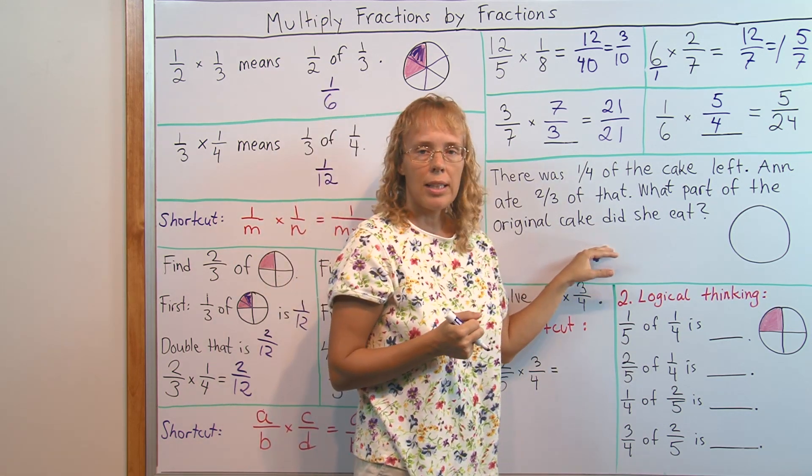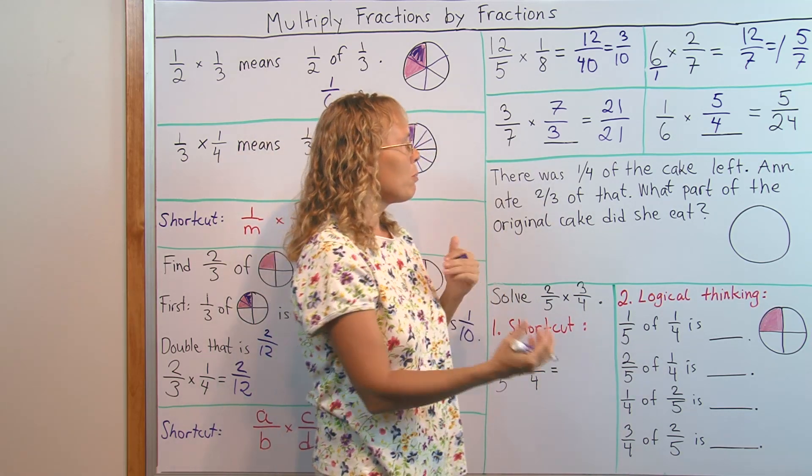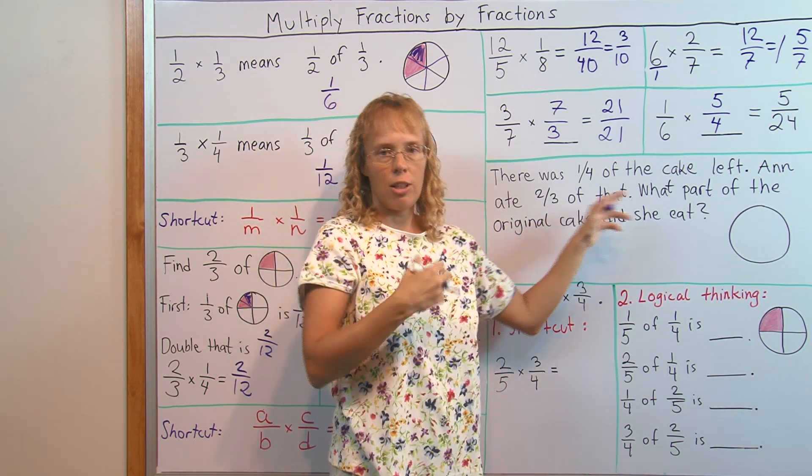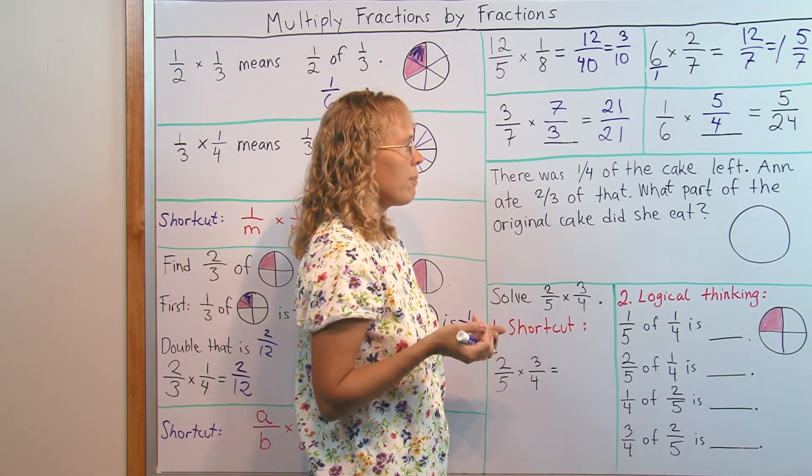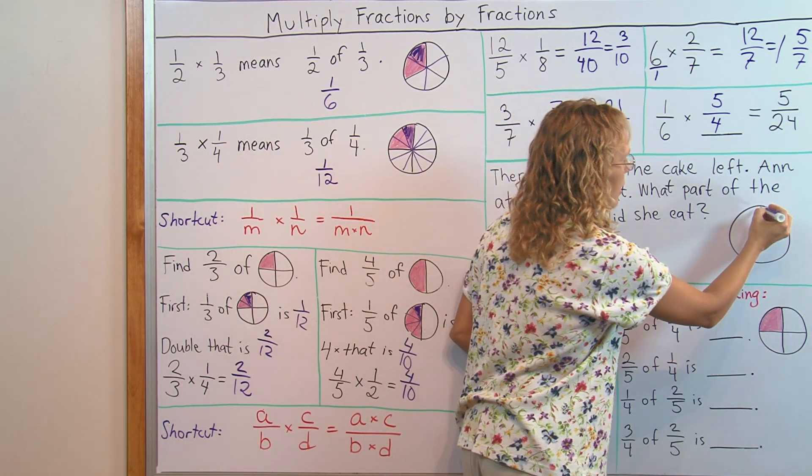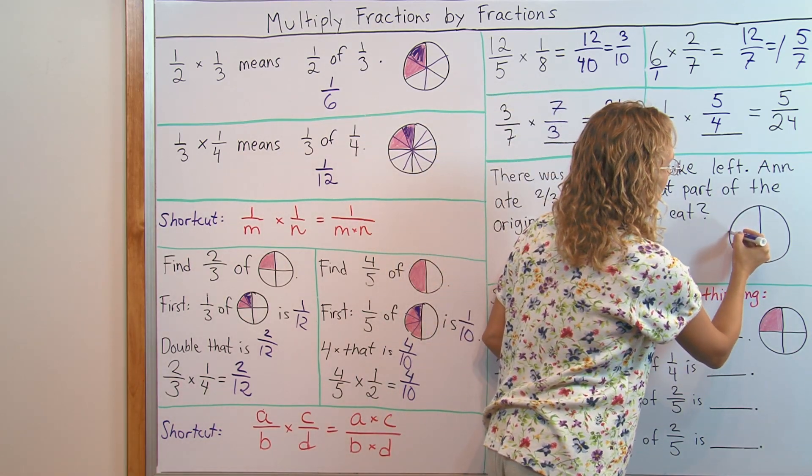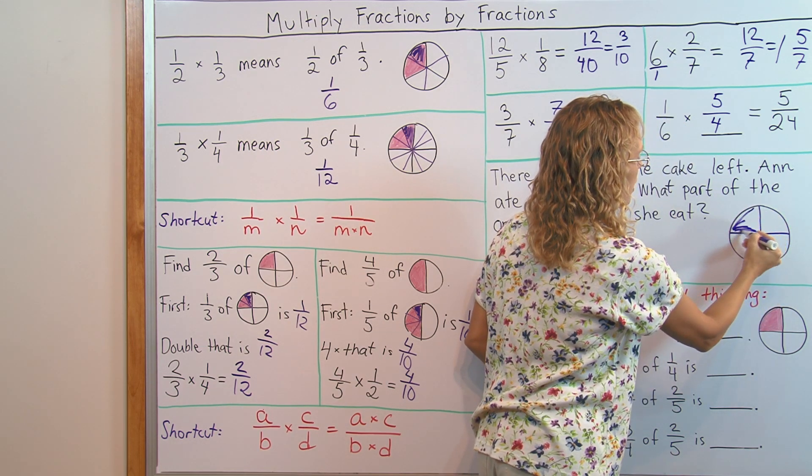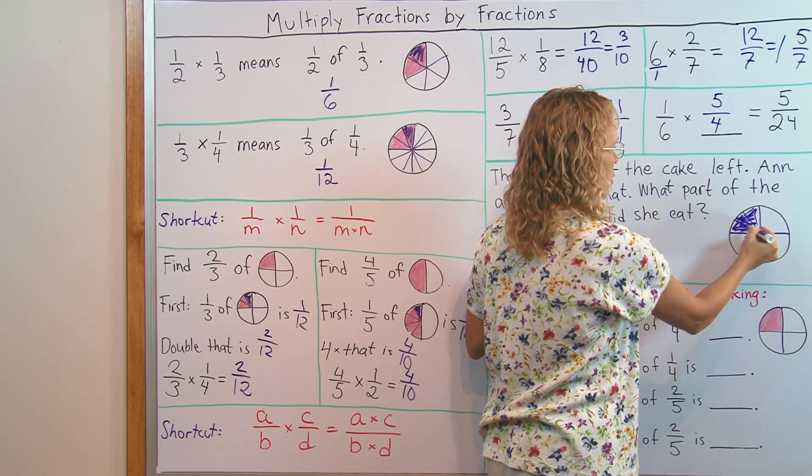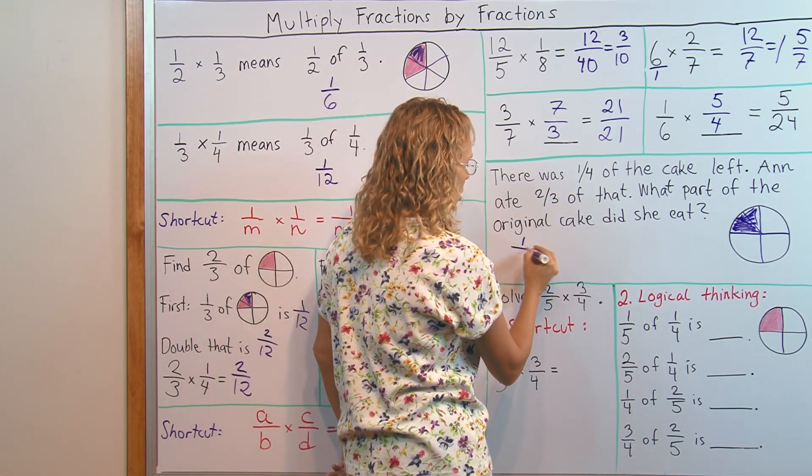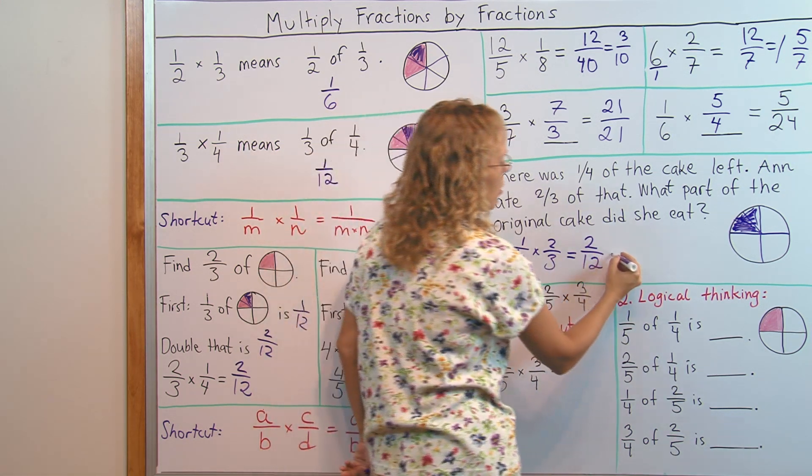Now here's one word problem that uses this concept. When we have the concept of fractions multiplied by fractions, then the word problems would be having this 'of' here, fractional part of a fraction. There was one fourth of the cake left, and Anne ate two thirds of that. What part of the original cake did she eat? This is a very easy problem, but students need to connect it with the fraction multiplication. One fourth here is how much is left, and then Anne ate two thirds of it. So we divide this remaining piece into three parts and then Anne ate two thirds of it. This is solved simply by multiplying these two fractions and we get 2 over 12. So the answer is 2 twelfths or it simplifies to 1 sixth.